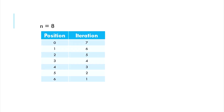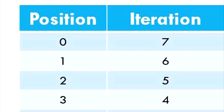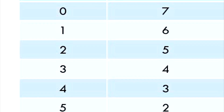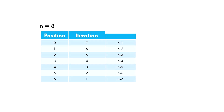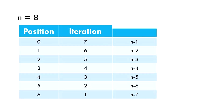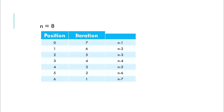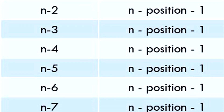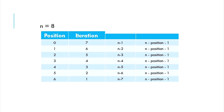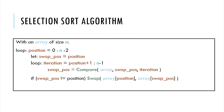Summarizing the positions and the iterations involved: we did 7 iterations at the 0th position, 6 iterations at the 1st position, 5 iterations at the 2nd, and so on. Generically, with n equals 8, we did n-1 iterations at the 0th position, n-2 at the 1st position, n-3 at the 2nd, and so on. If we look at the increasing position values, this series converts to n-position-1. Also notice how there are n-1 positions that we looked at. Using this information, a selection sort algorithm can be generically expressed as follows.